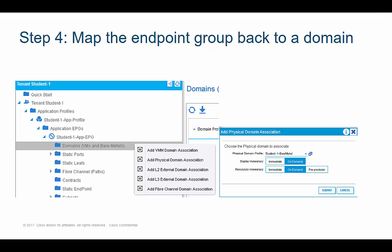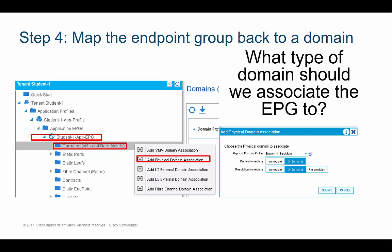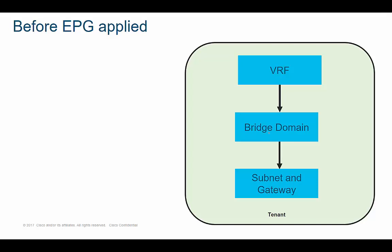This screenshot shows step four. In my EPG, I go to Domains, select the physical domain — because that's the type of domain you should have configured in your access policies for a bare metal server — and map back to the domain. After setting up the EPG this way, all the configuration we talked about earlier — VRF, bridge domain, default gateways — should finally get pushed out to leaf switch 101.